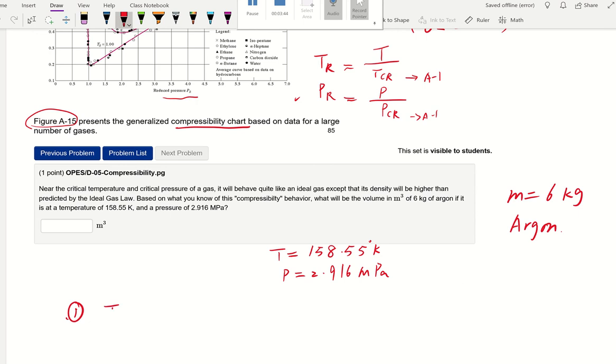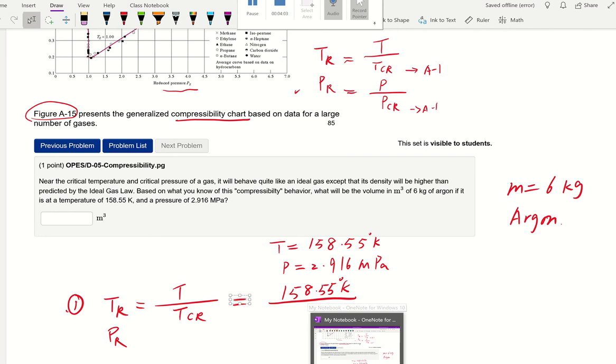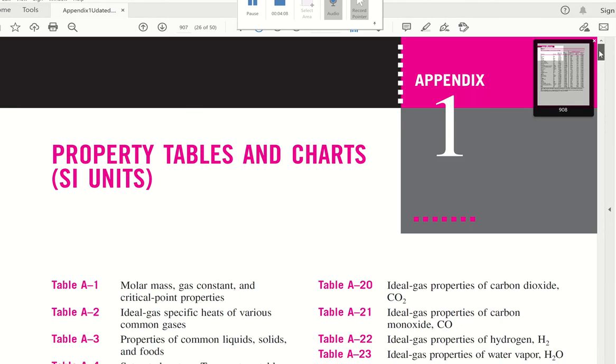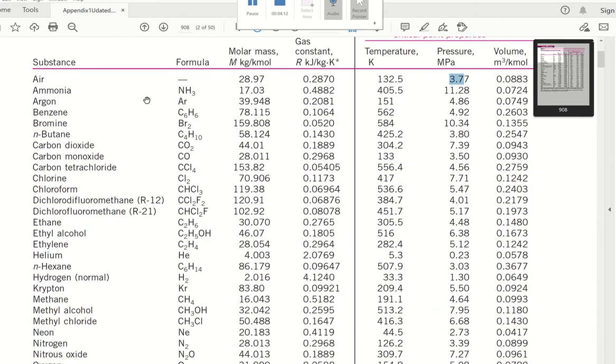First, we need to find our reduced temperature and reduce the pressure using given the temperature divided by the critical. So we're using 158.55 Kelvin. Then where do we find the reduced critical temperature? That's going to be from our table A-1 or the back to table A-1. And this is argon. And the reduced critical temperature is 151.